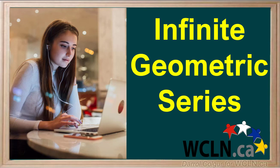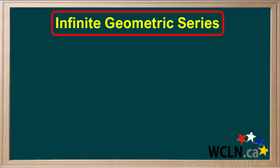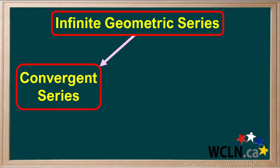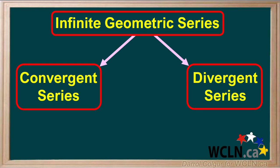An infinite geometric series is the sum of an infinite number of terms of a geometric series. There are two types of infinite geometric series: convergent series and divergent series. We'll look at some examples of each of these.